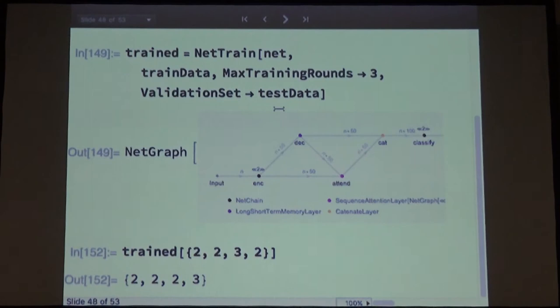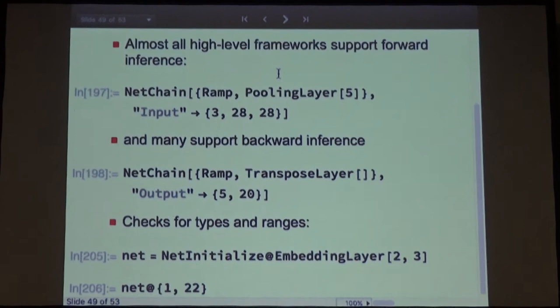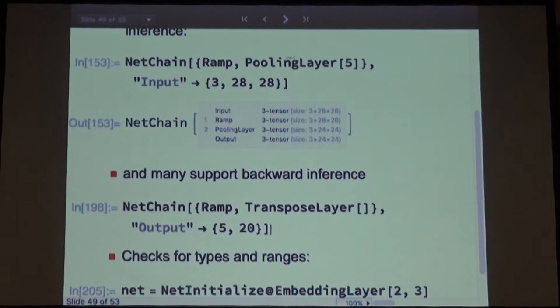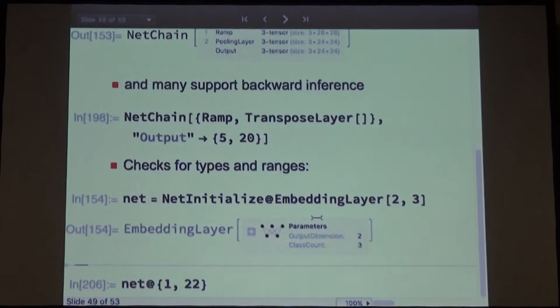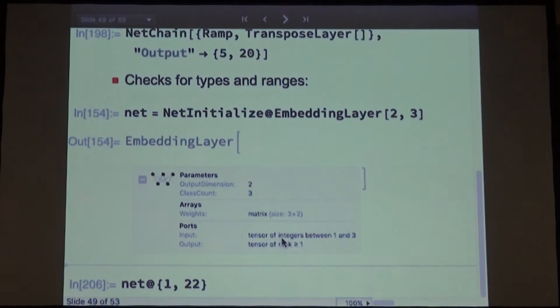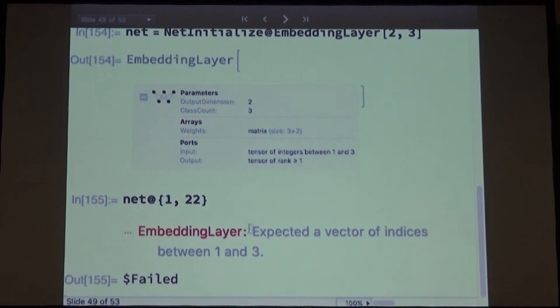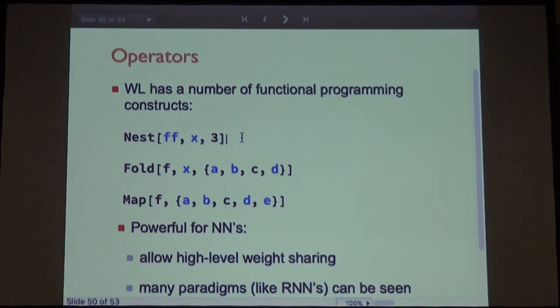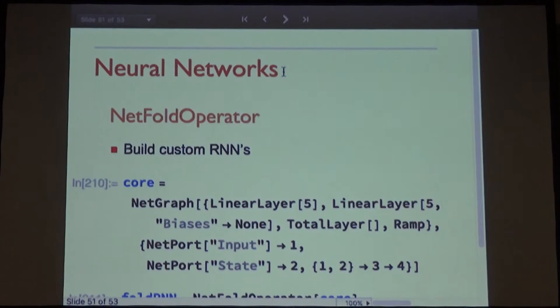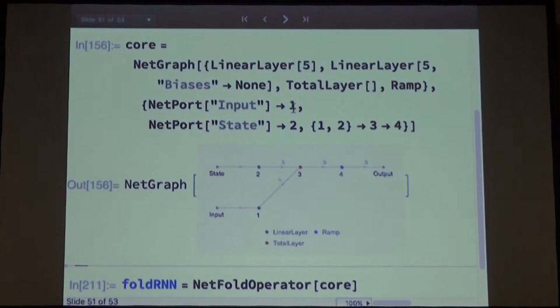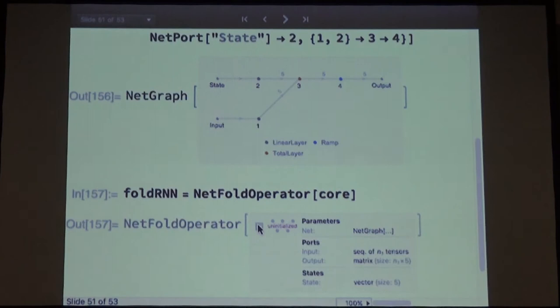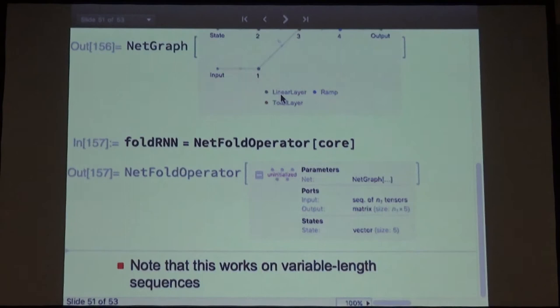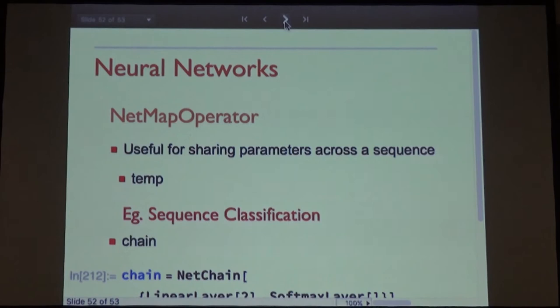Things like sequence-to-sequence learning work perfectly fine. We've spent a lot of time writing shape and type inference. For example, an embedding layer — if you look at the information, it gives nice English descriptions like 'tensor of integers between one and three', and if you try something wrong it gives a friendly error message: 'expected vector of indices between one and three'. We also have operators like nest and fold — you can define your own recurrent networks as a fold operation: define a single time-step network and say net fold it. This is the same as an ordinary RNN, and you can define GRUs or whatever you want. The map operator allows weight sharing and works for variable-length sequences.